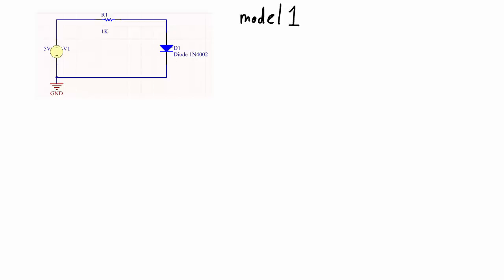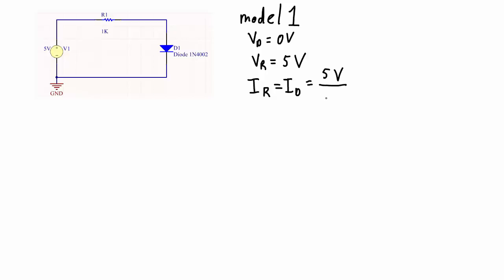To start off with Model 1, with the forward biased diode, the voltage across the diode is going to be modeled as 0 volts. That means the rest of the voltage from the voltage source is going to be dropped across the resistor — so 5 volts. The current in this circuit, since there's only one current, the resistor current and diode current are the same: 5 volts divided by 1,000 ohms, giving a current of 5 milliamps.